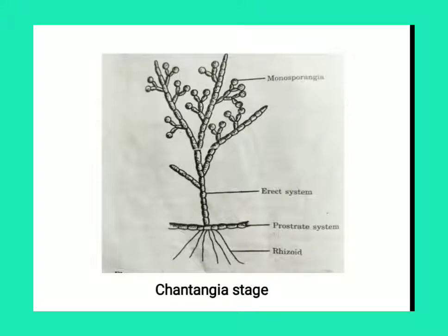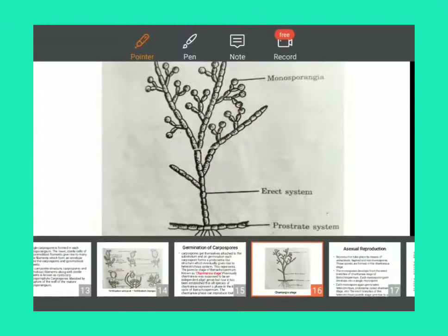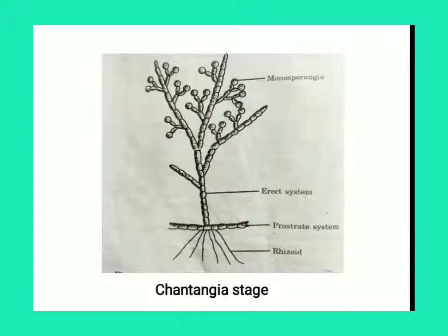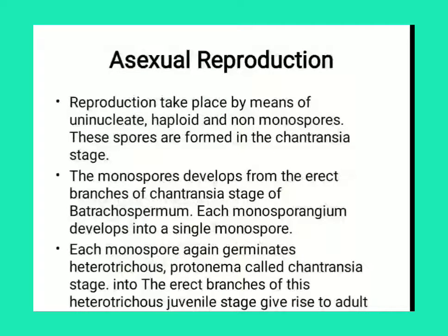You can see in this figure — some branches have a spore-like structure developing, and those spores further germinate into the whole plant body. This is known as asexual reproduction by the monospore.